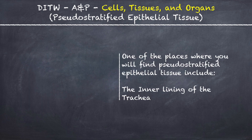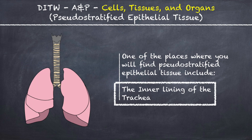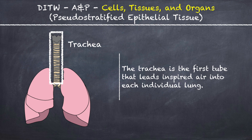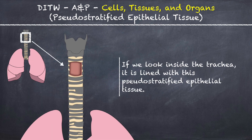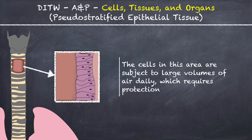One of the places where you will find pseudostratified epithelial tissue is the inner lining of the trachea. The trachea is the first tube that leads inspired air into each individual lung, and if we look inside the trachea it is lined with this pseudostratified epithelial tissue.